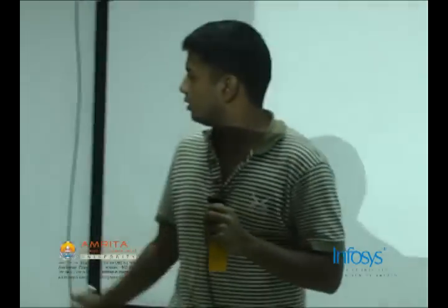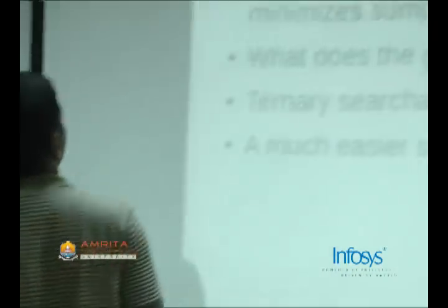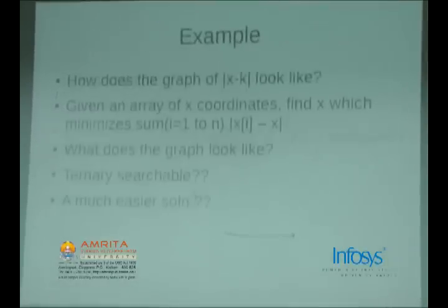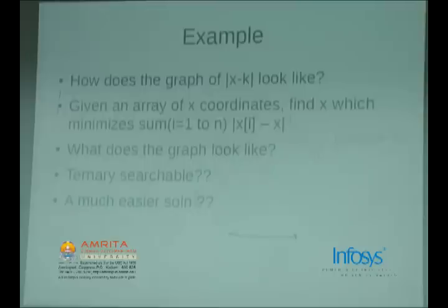Was there anything left there? So yeah, I discussed this before. What does the graph of |x-k| look like? At x equal to k it goes to zero and then it increases beyond that.